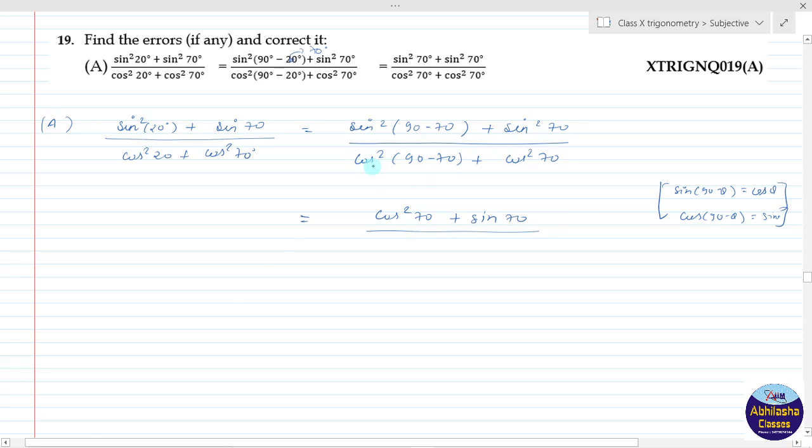And in the denominator, cos of 90 minus 70 becomes sin 70. So we have sin squared 70 plus cos squared 70.